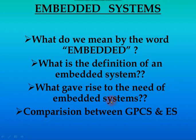The third topic is what gave rise to the need of embedded systems — what are the circumstances that arose at one point in time that led to the need for embedded systems. The fourth topic is a comparison between GPCS (General Purpose Computing Systems) and embedded systems, which I am going to explain clearly in this video.